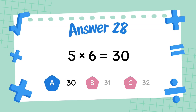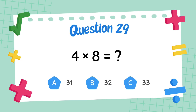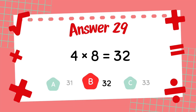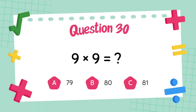What is 4 multiply 8? The answer is 32. What is 9 multiply 9? The answer is 81.